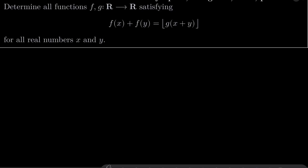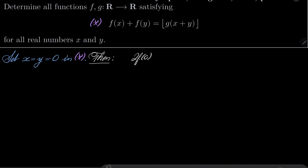Let's call this equation asterisk and start by setting x and y both to 0 in our condition asterisk. Then we have 2f(0) equals floor of g(0), which of course implies that f(0) equals one half times floor of g(0).